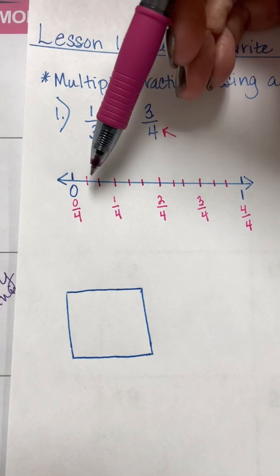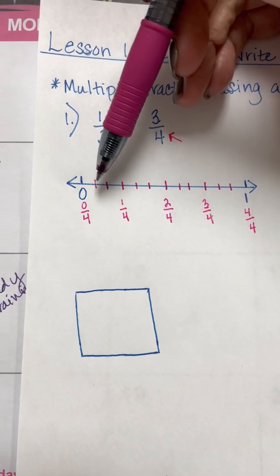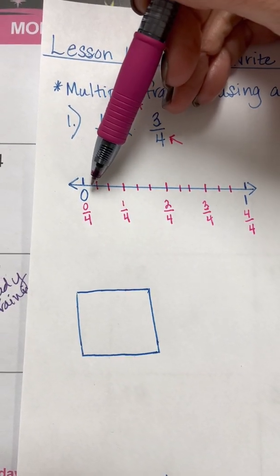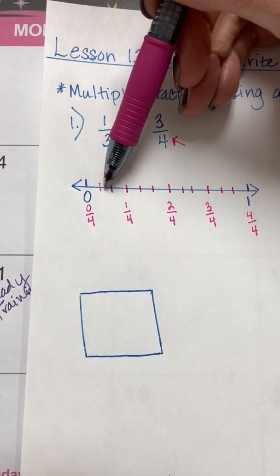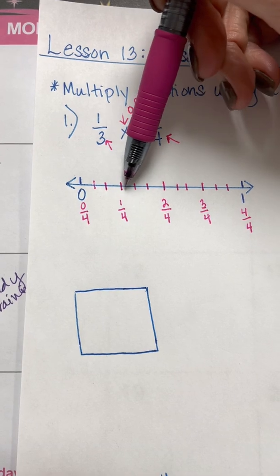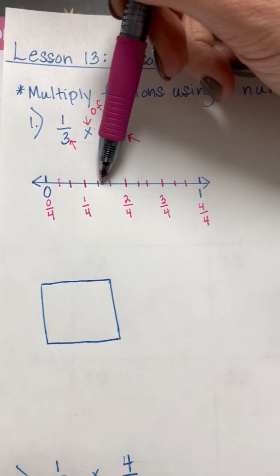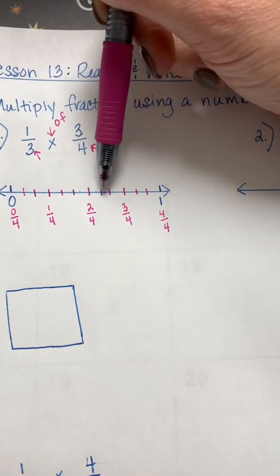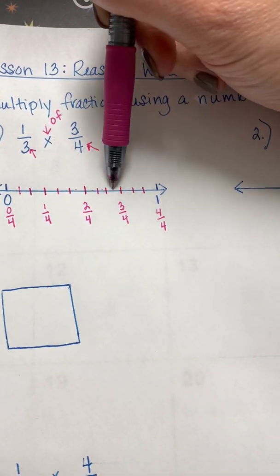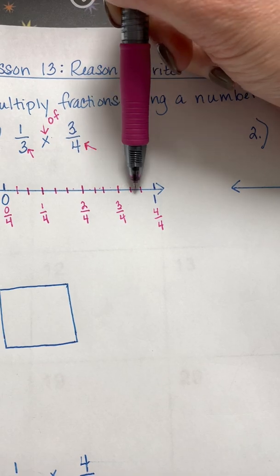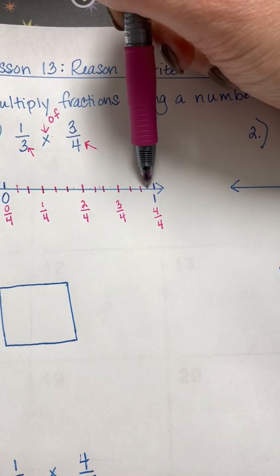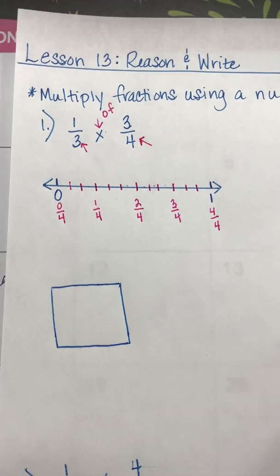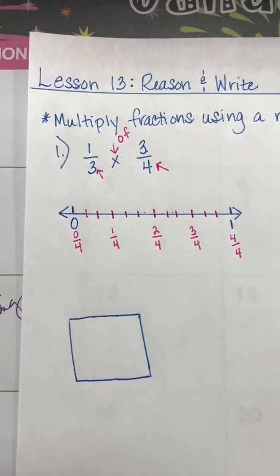Let's figure out how many pieces we actually have. Counting them all up: one, two, three, four, five, six, seven, eight, nine, ten, eleven, twelve. So we actually have twelve pieces, and we're only going to be shading a certain number of those.